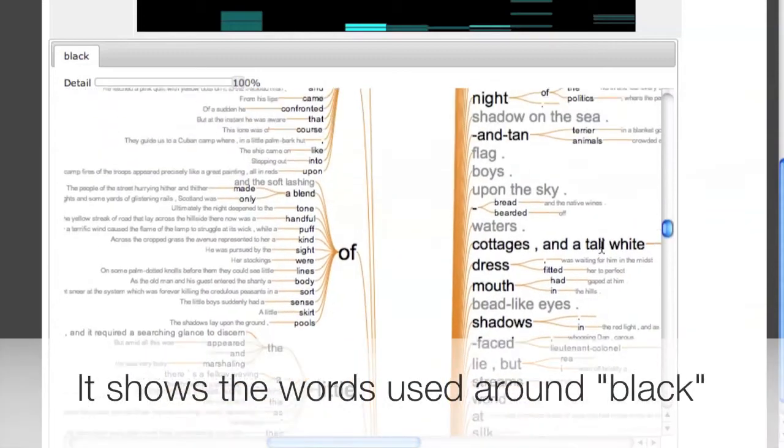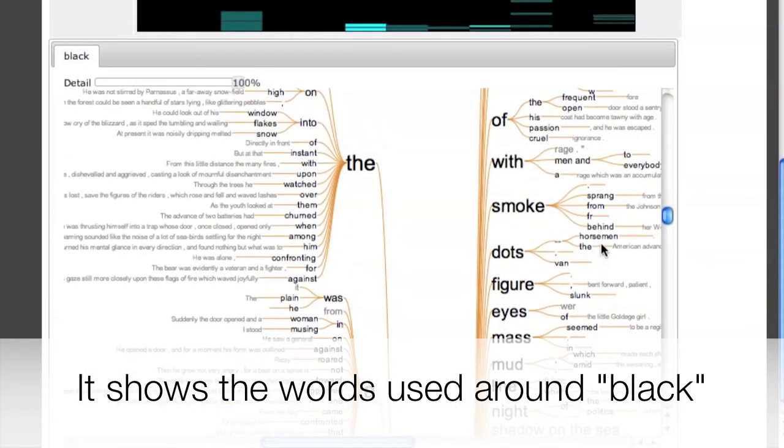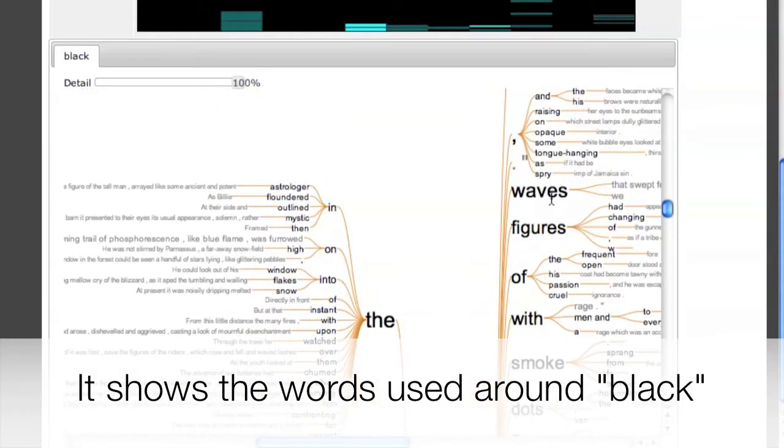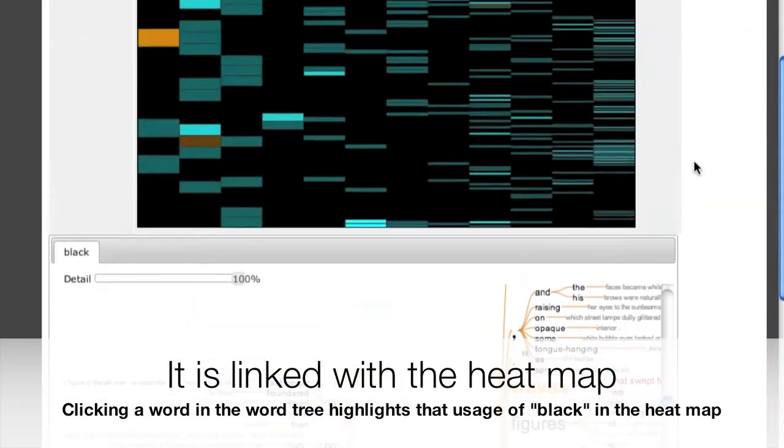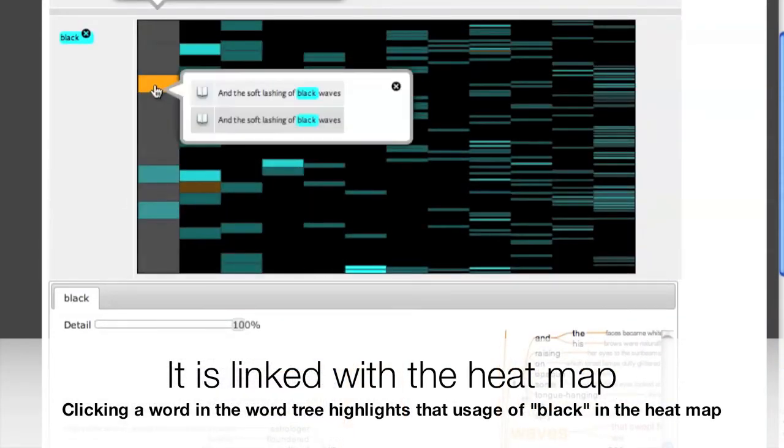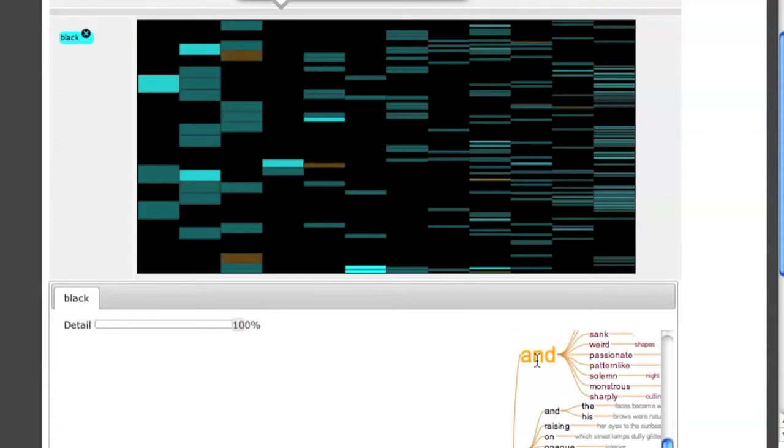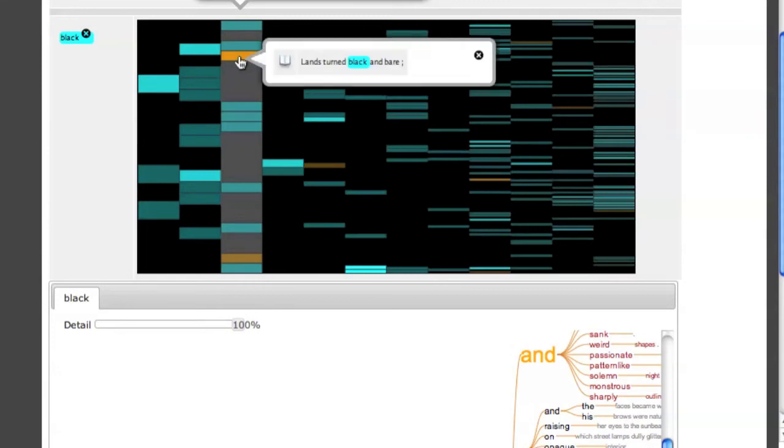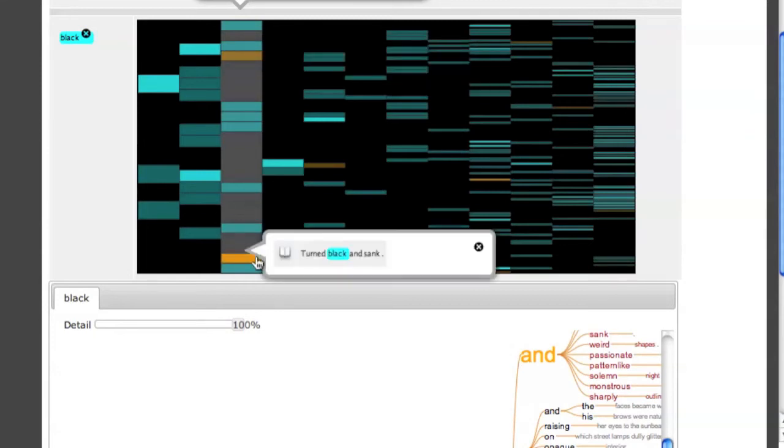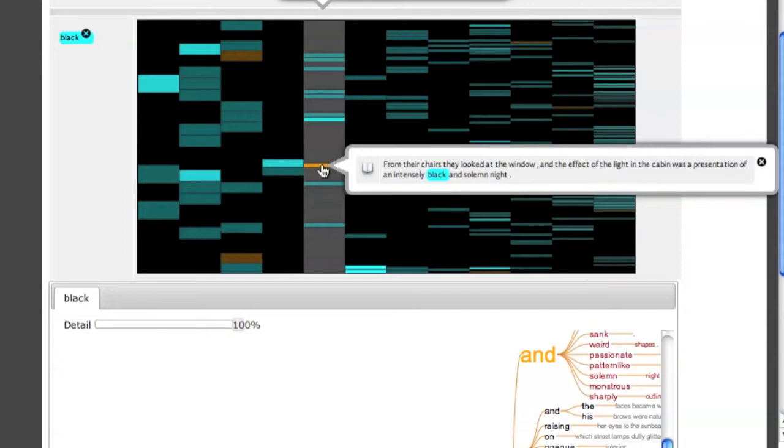We also have a word tree visualization. This visualizes all the contexts in which black occurs. It's linked to the heat map. And so clicking on a particular context highlights that context in the heat map. In this case, I've highlighted and. And so I see all occurrences of black and something else.